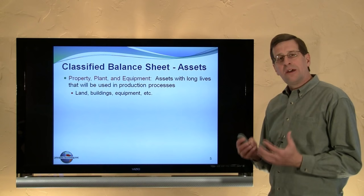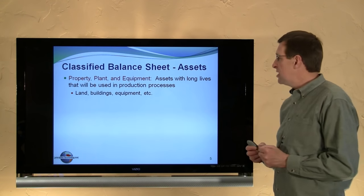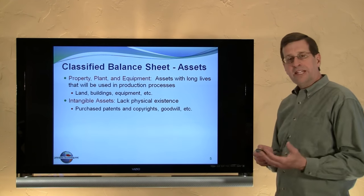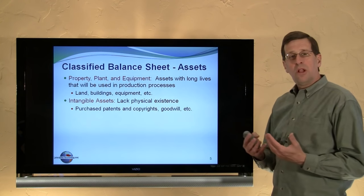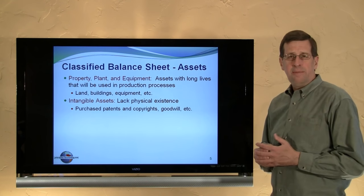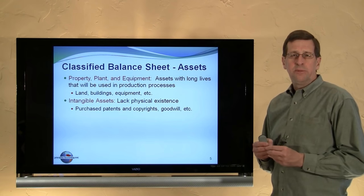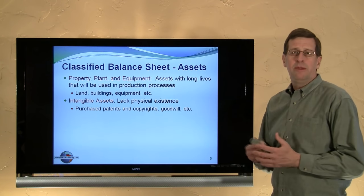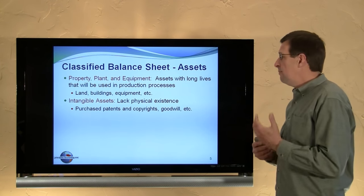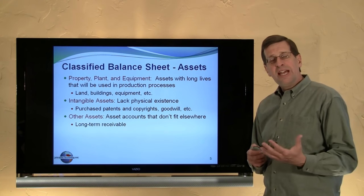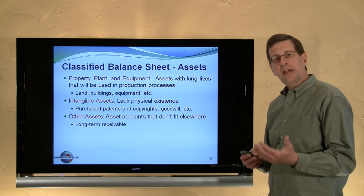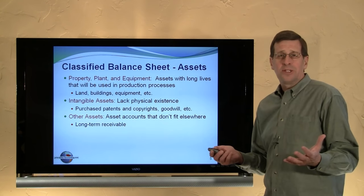Property, plant and equipment is the third major category of assets on the classified balance sheet. These are assets with long lives used in the productive process, such as land, buildings, and equipment. That's followed by intangible assets — some businesses hold intangible assets they've purchased, such as patents or a copyright. There are also unique intangible assets: when one business buys another, they may pay a premium price for that business — that premium is referred to as goodwill and would be reported as an intangible asset on the balance sheet. Finally, the fifth category is other assets, appropriate for things that simply don't fit somewhere else on the balance sheet.